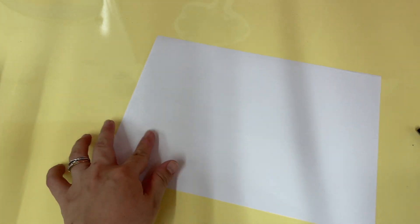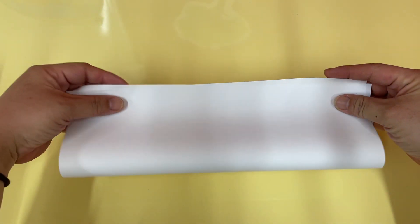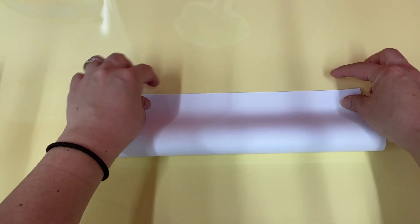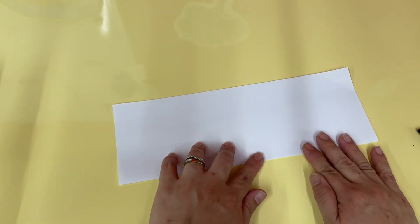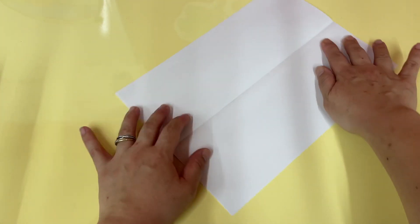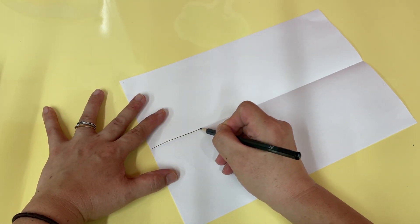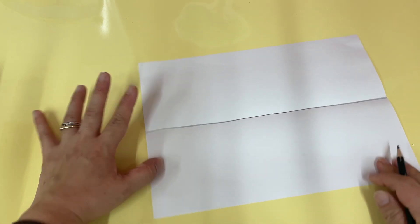Okay, so let's start. Step one is to fold your paper in half like this. Fold it. Tada! Okay, so and then you open it and draw a line in the middle.